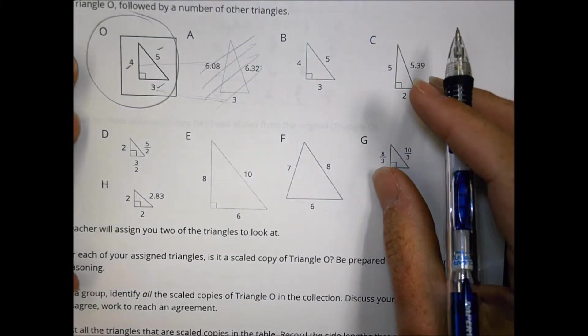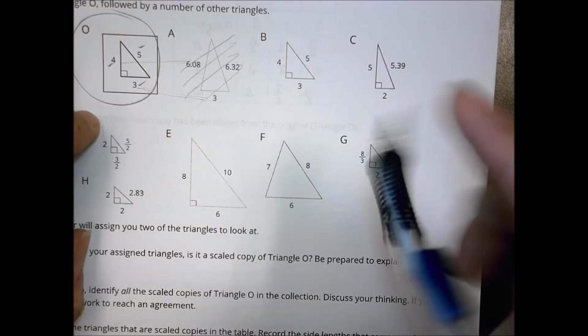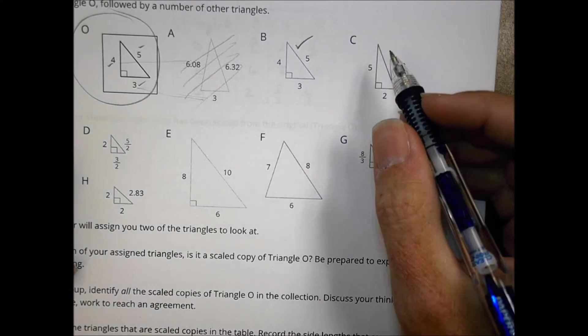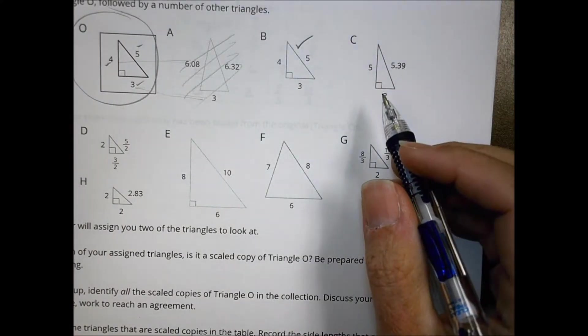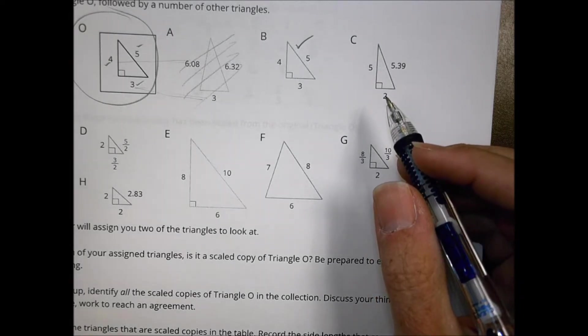But then you could take a look at something like a B and recognize that this one has the exact same numbers, 3, 4, 5. So that's going to be a similar triangle there. No problem. And you went through the whole process to figure out which triangles were the ones that were scaled copies of the original.